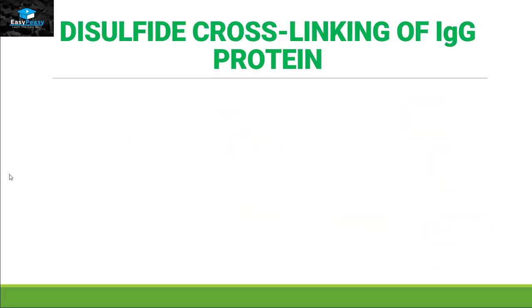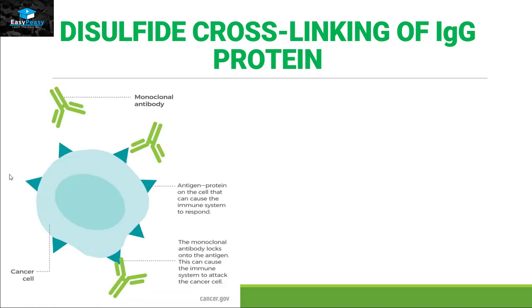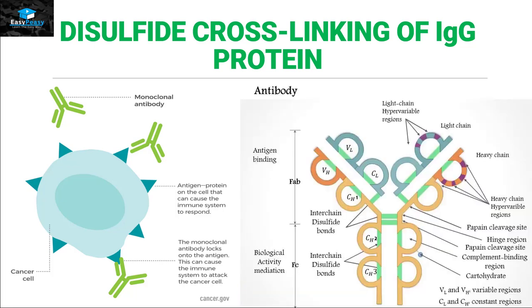Disulfide cross-linkage of IgG protein: IgG is basically the antibody present inside our body that acts as a defensive system against bacteria or viruses. Looking closely at the structure of this antibody, we find a lot of inter-chain disulfide bonds shown in the green shade. This inter-chain disulfide bond helps the protein maintain its shape and perform its function.